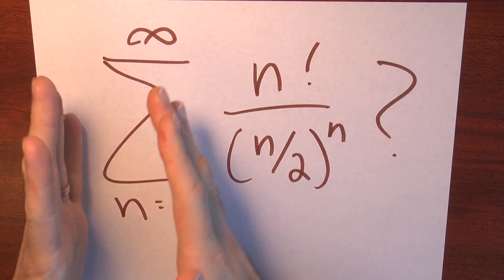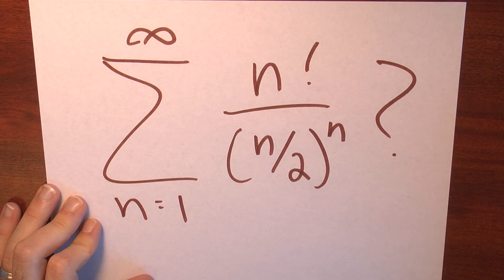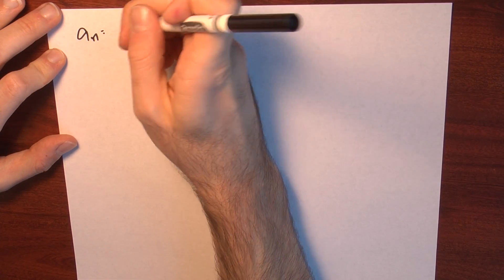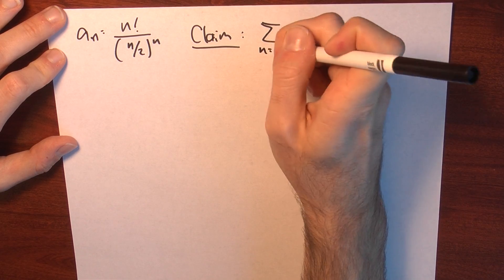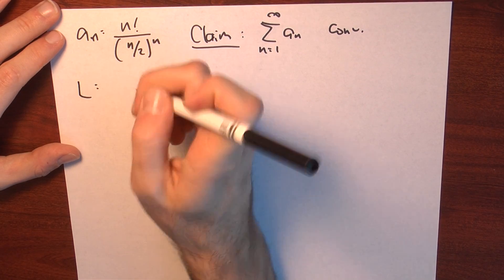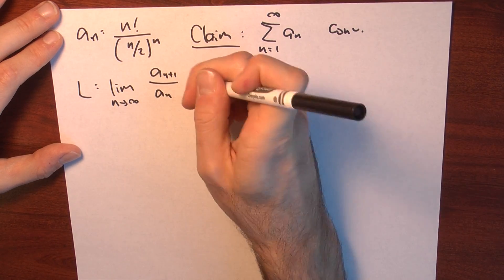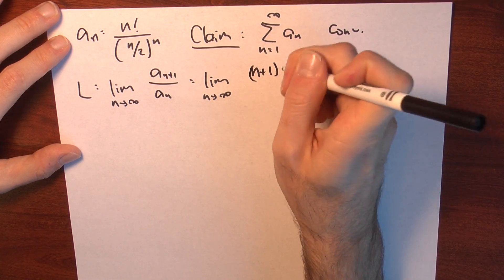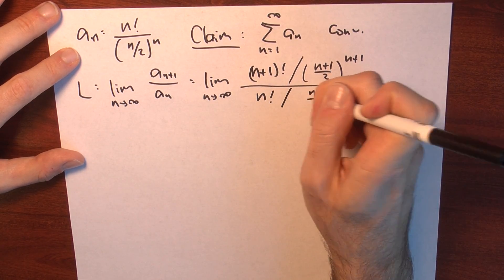We can do even better. Does the series from n=1 to infinity of n! divided by (n/2)^n converge or diverge? Yes, this series converges. Let's see why. We set a_n equal to n! over (n/2)^n, and the claim is that the sum converges. To justify this, I'll use the ratio test. Big L is the limit as n approaches infinity of a_{n+1} over a_n. That's the limit as n approaches infinity of (n+1)! over (n+1)/2)^(n+1), divided by n! over (n/2)^n.